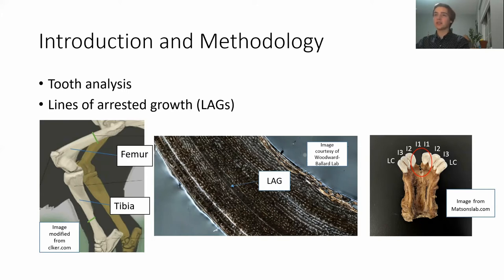Unlike tree rings, however, lines of arrested growth can be destroyed by growing bone and vary in number between bones from the same individual. I collected the femur, tibia, and first incisor from six female Rocky Mountain Elk.